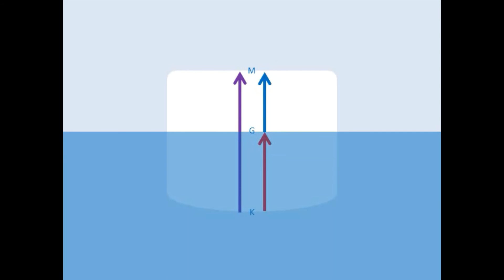Through this illustration we can create an equation. KM is equal to KG plus GM. KG is equal to KM subtracted by GM.